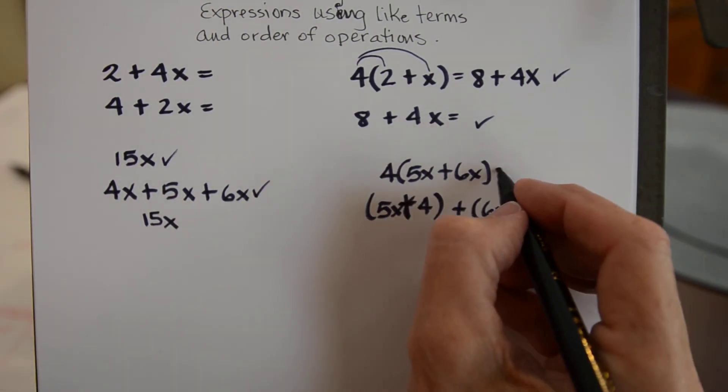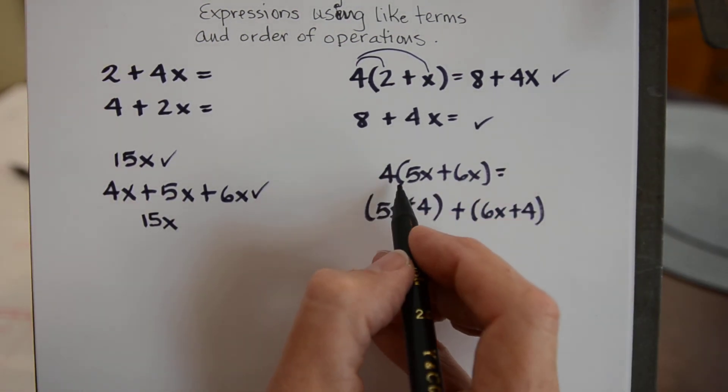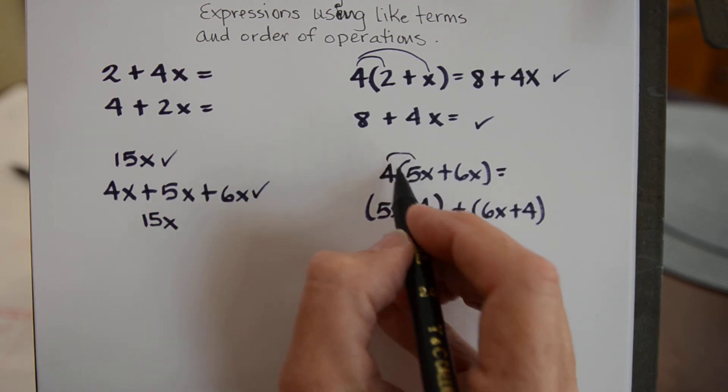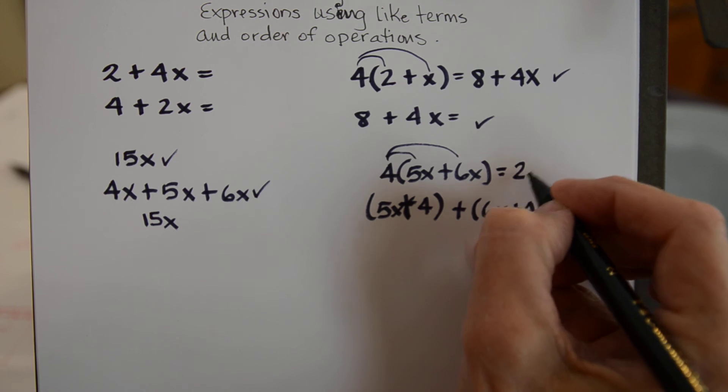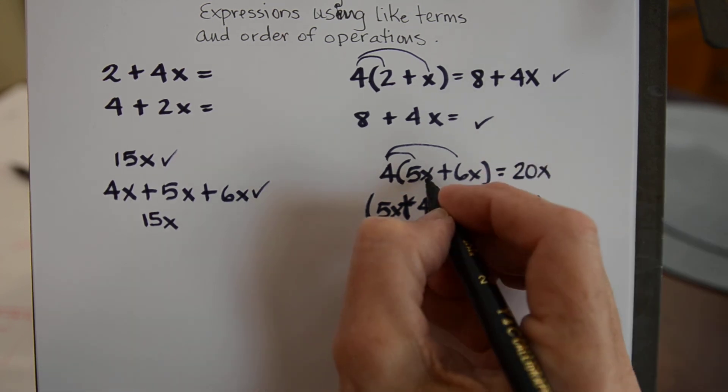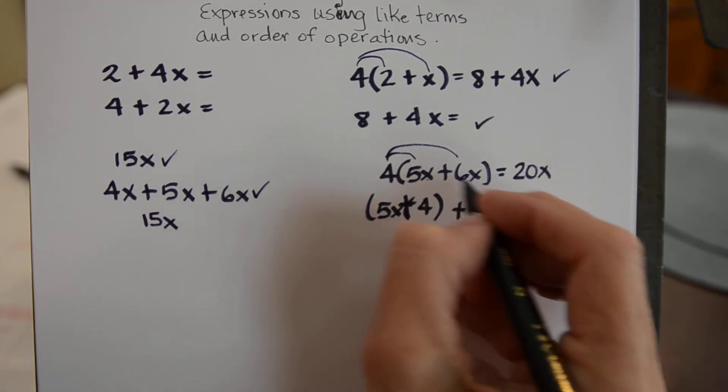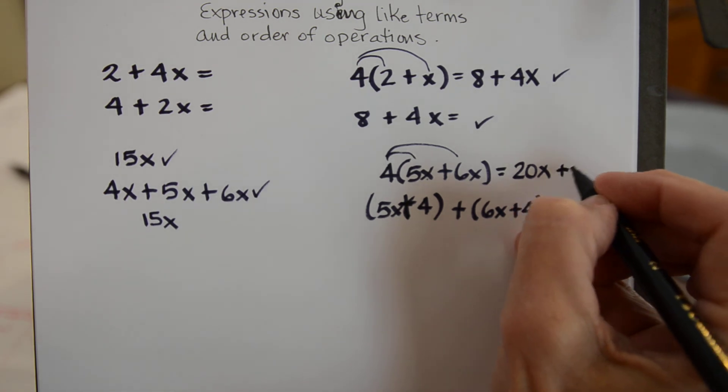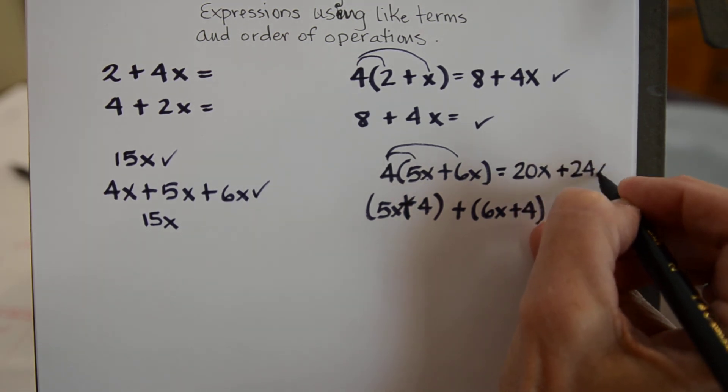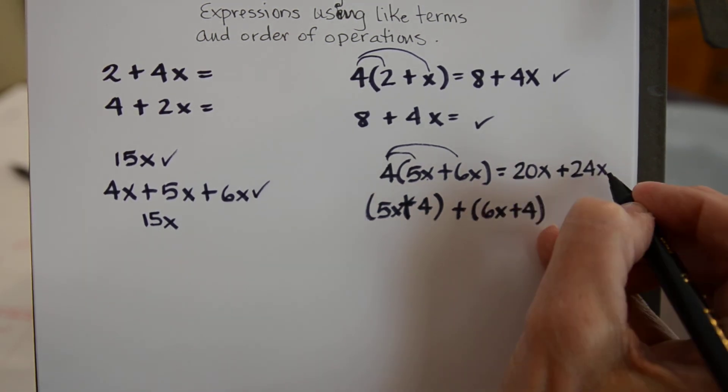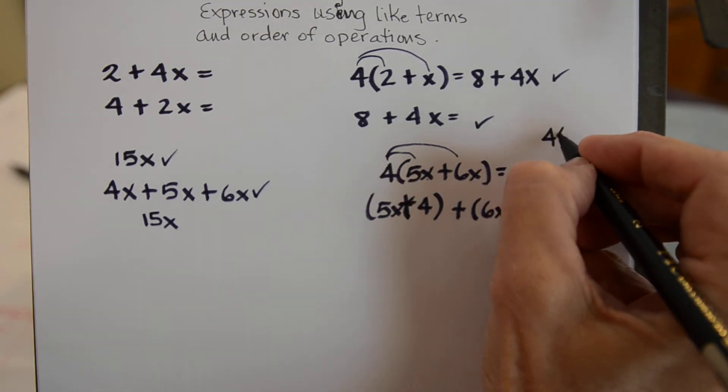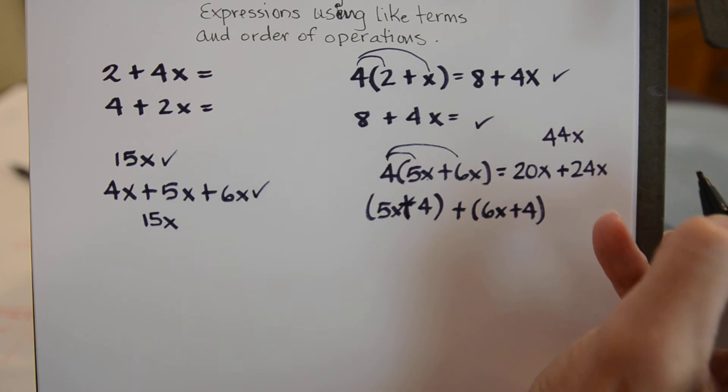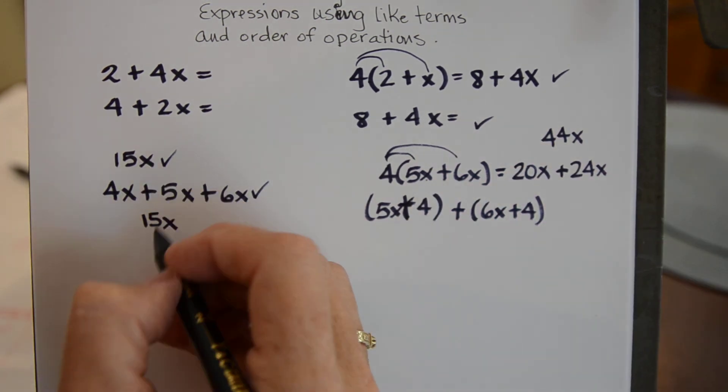Let's look over here and see what this would simplify to. This is that distributive property again so we're going to distribute this to each piece. So 4 times 5 is 20 and it gives us 20x because we had the x. And 4 times 6 is 24 but it also had the x. So this can be added together which would then become 44x. So that does not equal any of that.